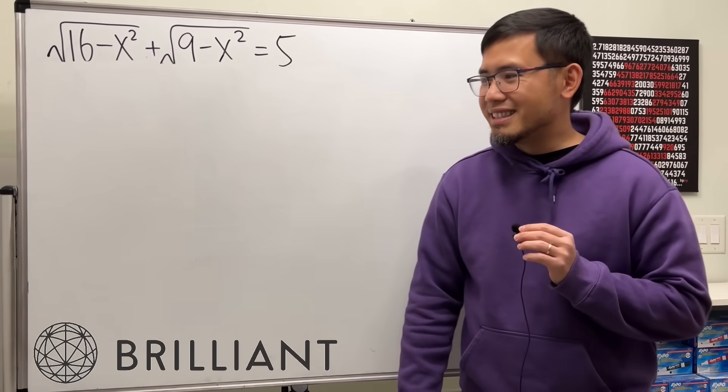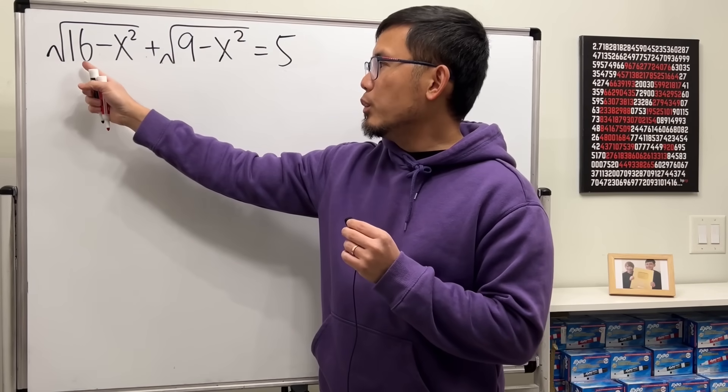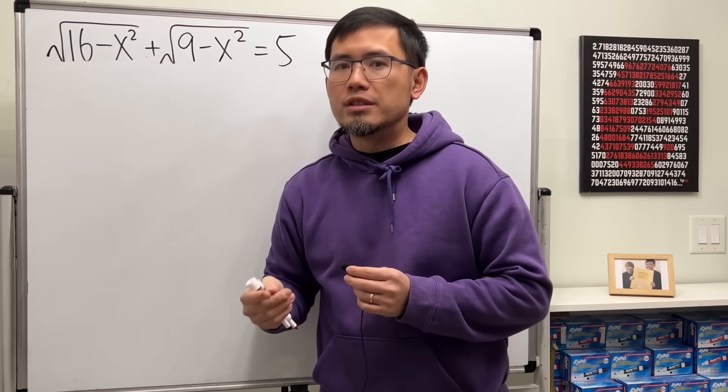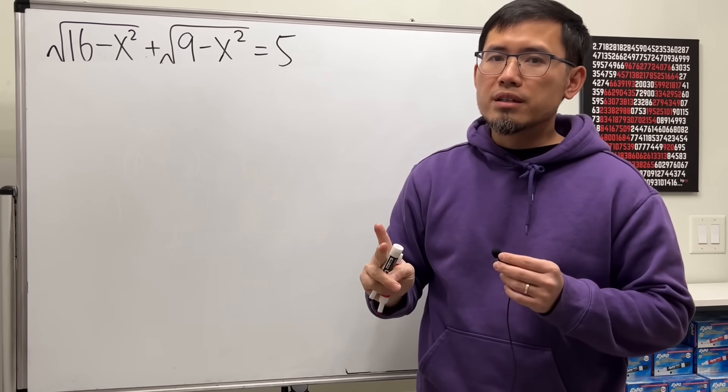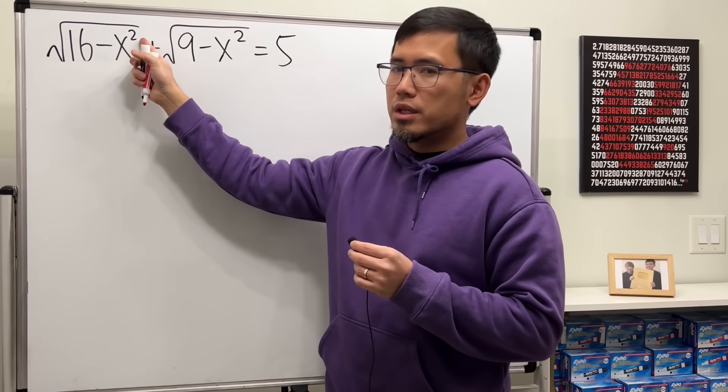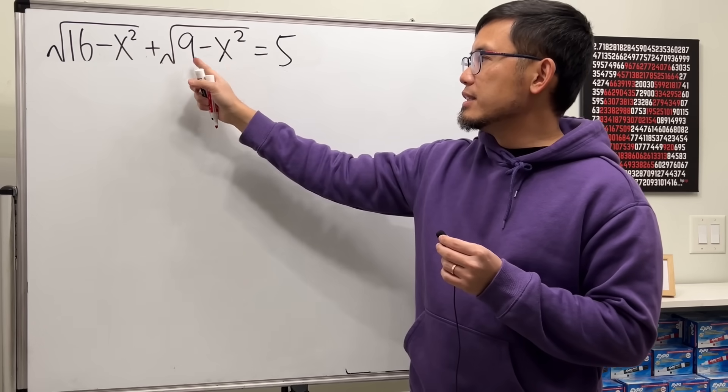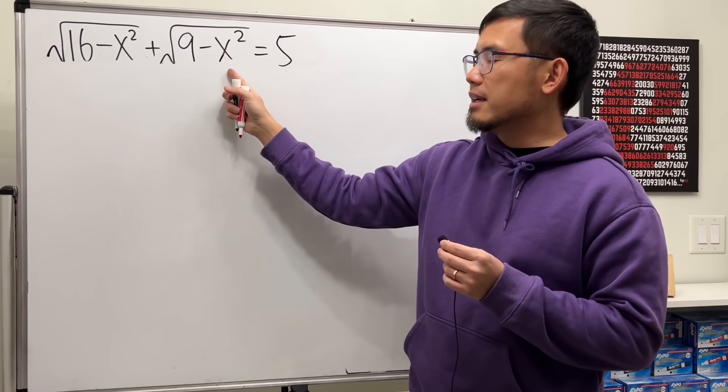Okay, let's do some math for fun and have a look inside. Here we have 16, which is the same as 4 squared, and then minus x squared. Likewise, this is 3 squared minus x squared.